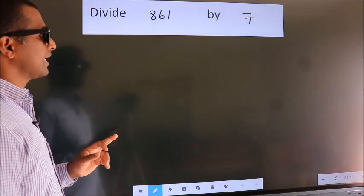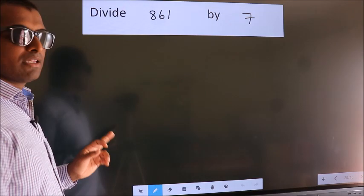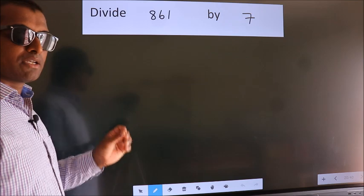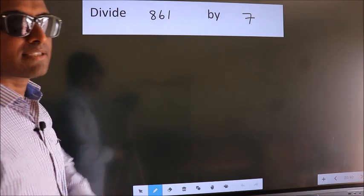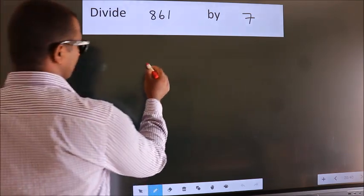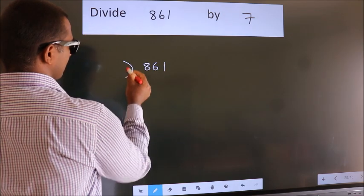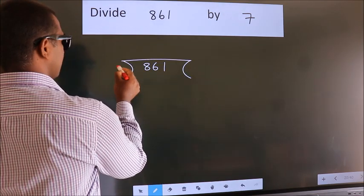Divide 861 by 7. To do this division, we should frame it in this way. 861 here, 7 here.